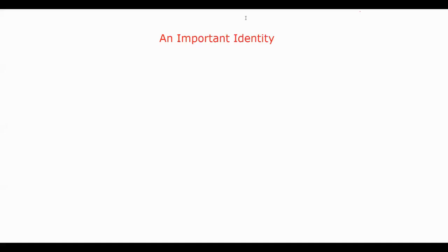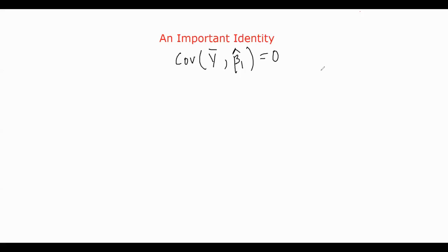Hello guys, so I am back with a really interesting and important property. The property is actually not really geometrically or physically understandable in my viewpoint, but there can be some aspect to it — if you know it, if you understand, please let me know in the comments. So the property is this: it's more sort of an algebraic format for me. It's covariance of ȳ comma β̂₁ is equal to zero. That means ȳ and β̂₁ are sort of perpendicular to each other in terms of linearity, linear dependence. So ȳ and β̂₁ are sort of not related to each other. So let's prove this property.